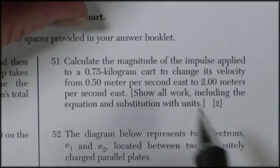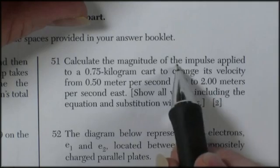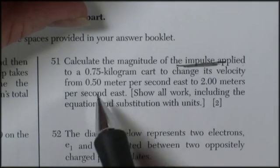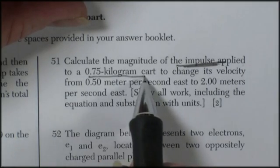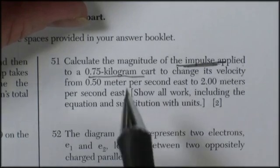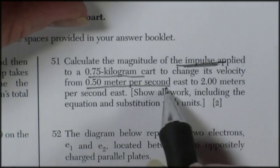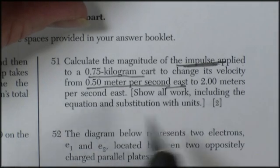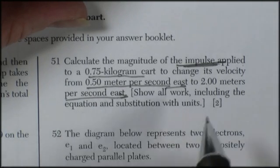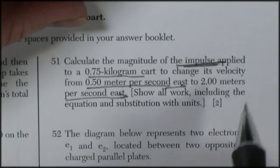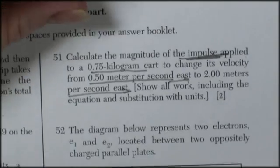Question 51. Calculate the magnitude of the impulse applied to a 0.75 kilogram cart to change its velocity from 0.5 meters per second east to 2 meters per second east. Show all work, including the equation substituting units. Two points for this.